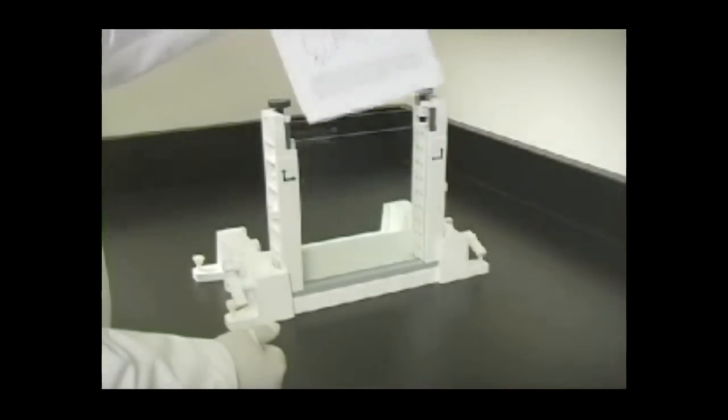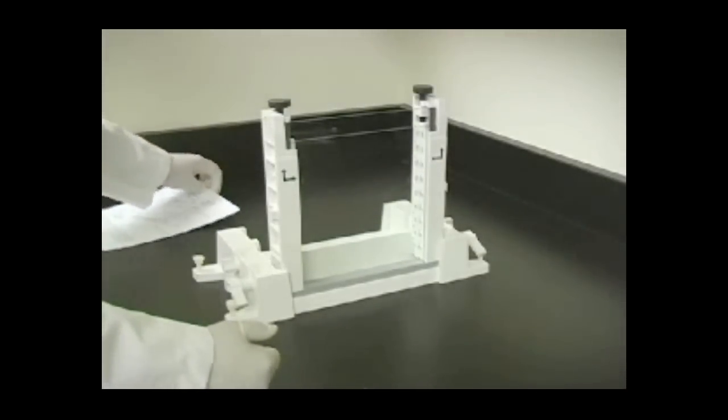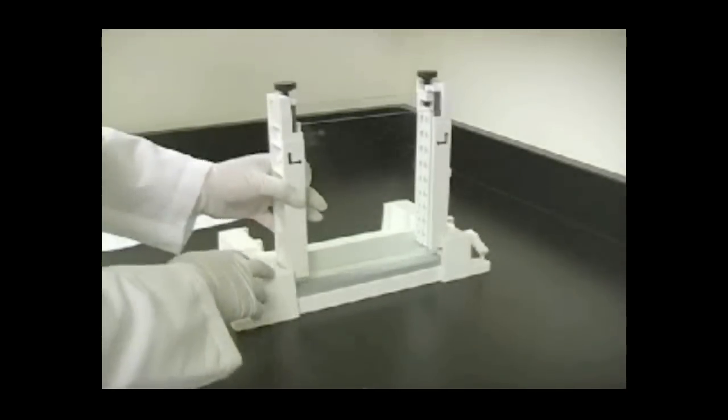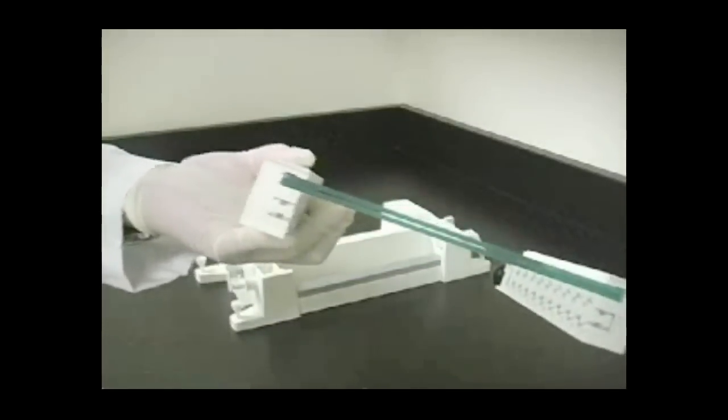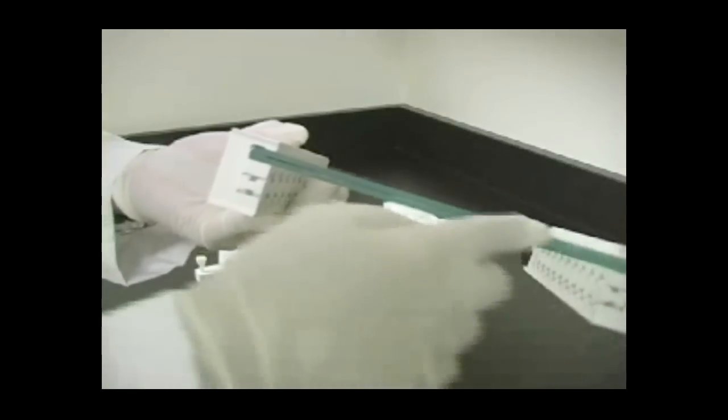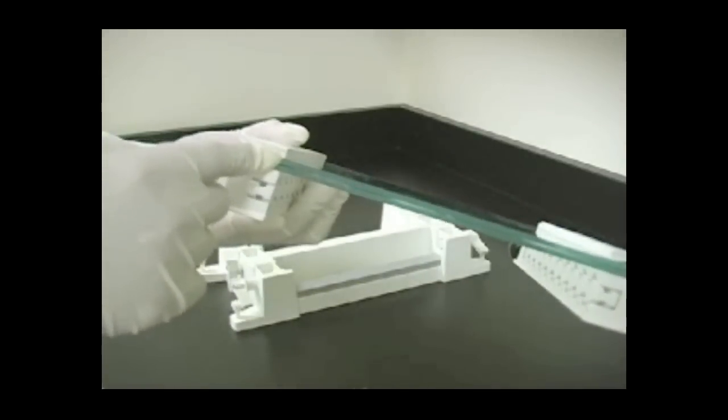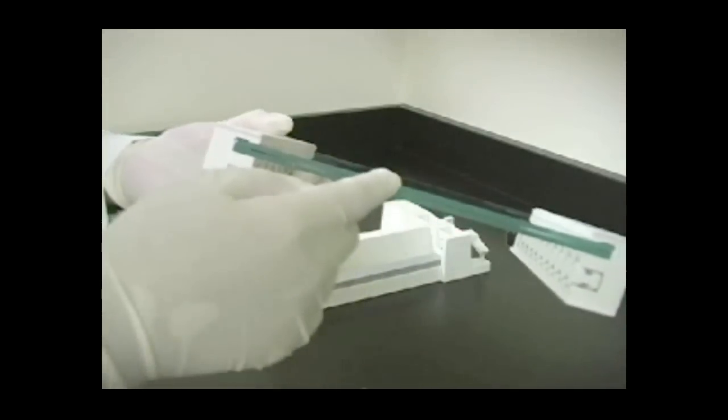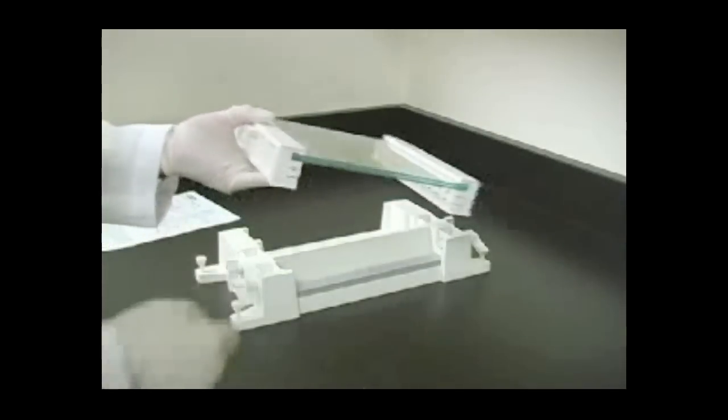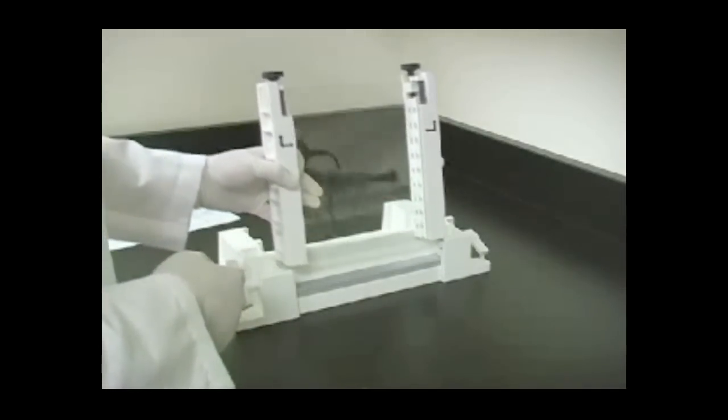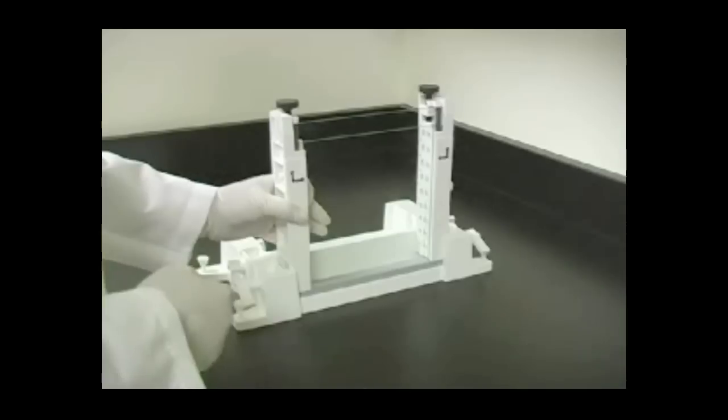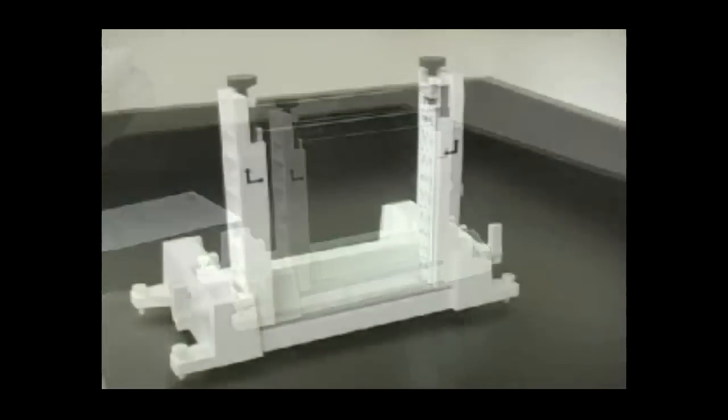Remove the alignment card. Pull the sandwich from the casting slot and check that the plates and spacers are flush at the bottom by running your fingers across the contact area between the glass plates and spacers. You should not feel any indentations. If you do, you must realign the sandwich again. Place the sandwich back in the casting slot, short plate facing outwards.